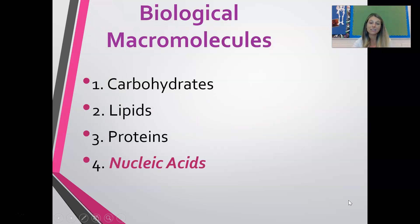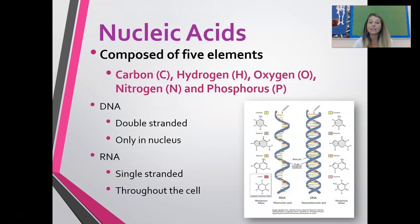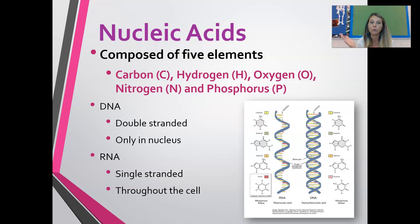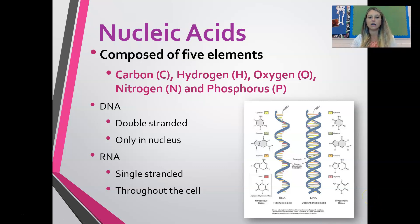Finally, we have nucleic acids. These are composed of five elements — CHONP: carbon, hydrogen, oxygen, nitrogen, and phosphorus. Examples of nucleic acids include DNA — deoxyribonucleic acid — which is double-stranded and found in the nucleus, and RNA — ribonucleic acid — which is single-stranded and found throughout the cell. We'll get into DNA and RNA in great detail later this semester.